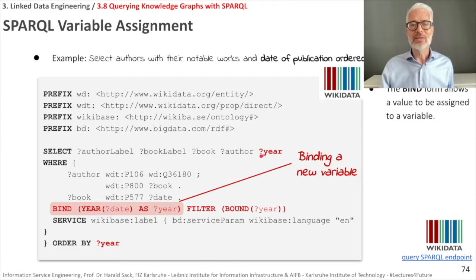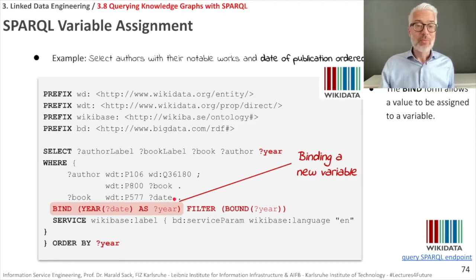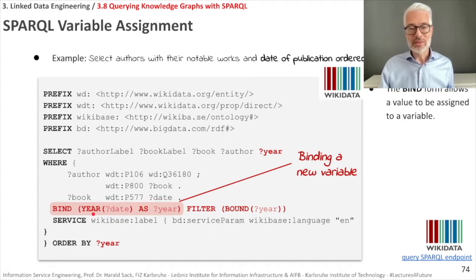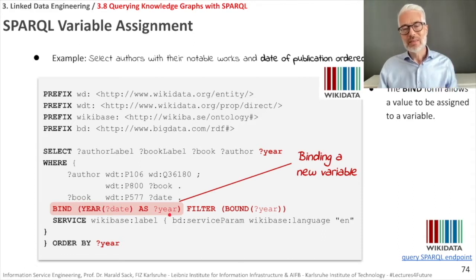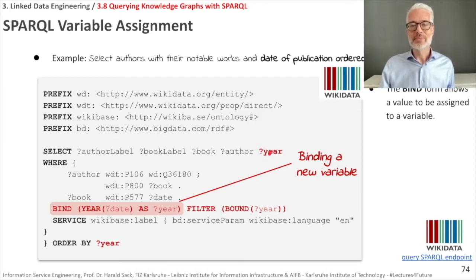We include a year variable in our output. However, we cannot access the year directly — we can only access the full publication date, which consists of year, month, and day. There is a YEAR() operator that can be applied to any date format to extract the year as an integer. We use BIND to assign the result of YEAR(date) to a new variable called year, using the syntax BIND(YEAR(date) AS ?year).